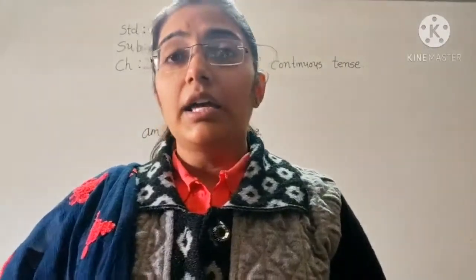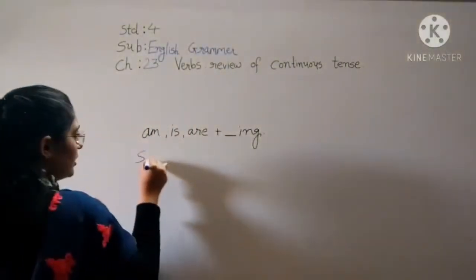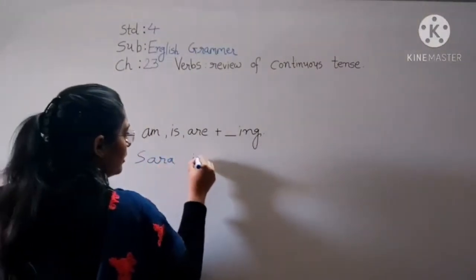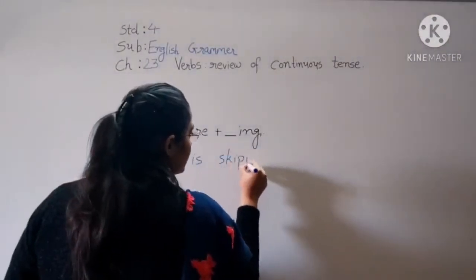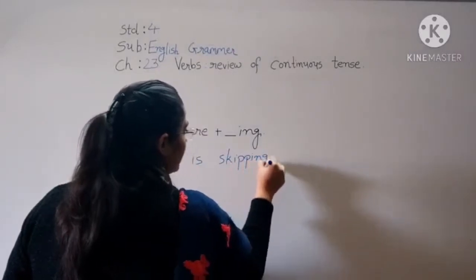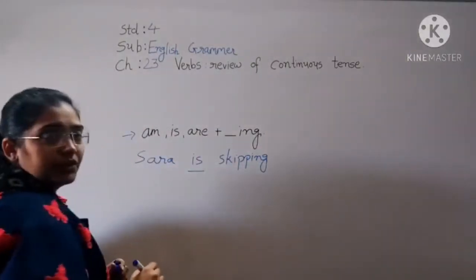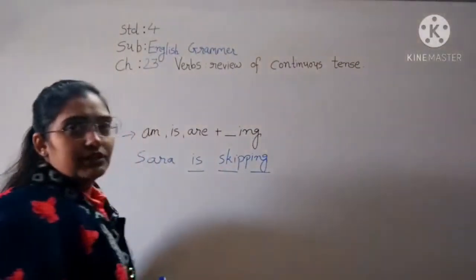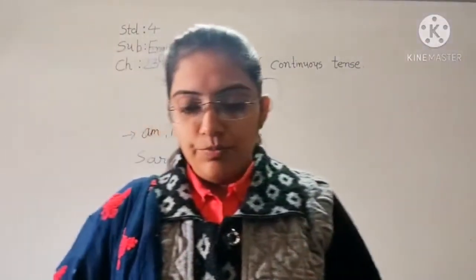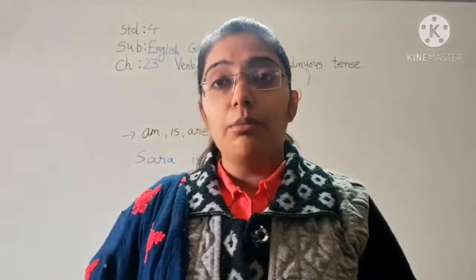Some examples are given. Example one: 'Shara is skipping.' Here 'is' is used with the ING form. Number two: 'David is kicking a ball' — again, is plus the ING form of the verb.